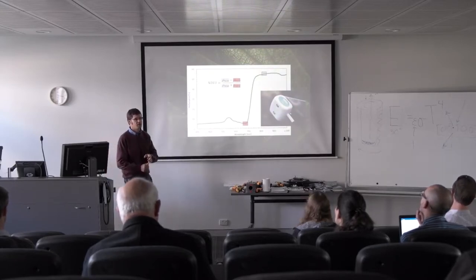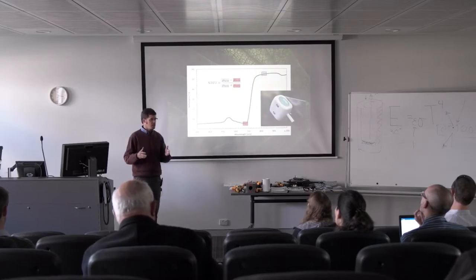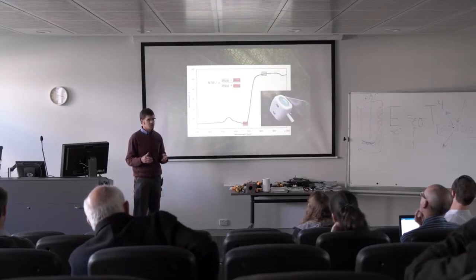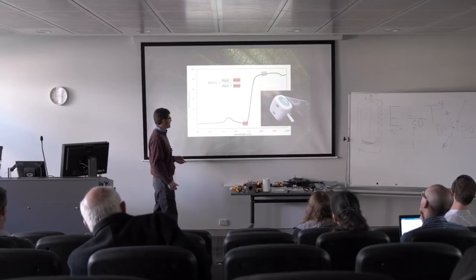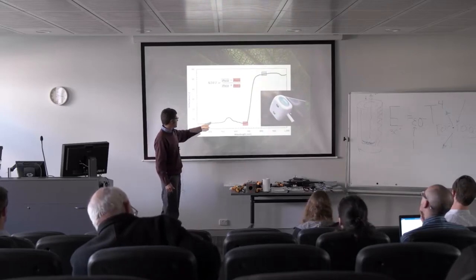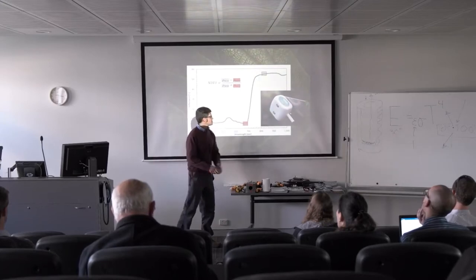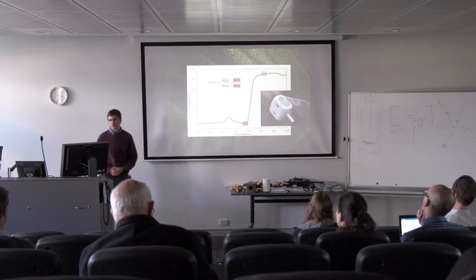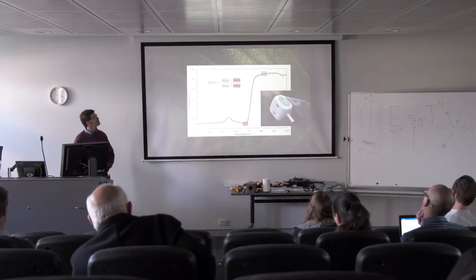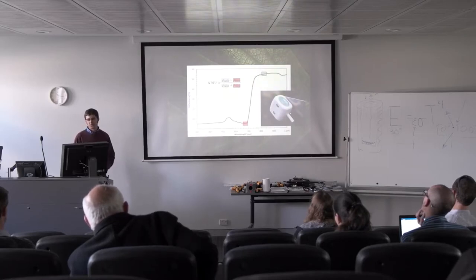I showed some prices earlier of spectroradiometers—$3,000 to $6,000 was a rough estimate of an instrument that would give you this reflectance spectrum. This two-channel radiometer is about an order of magnitude lower, maybe a $300 instrument, somewhere in that ballpark.